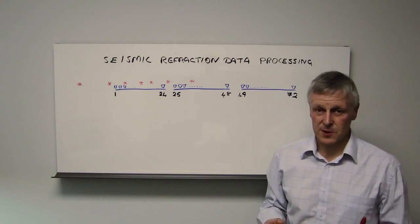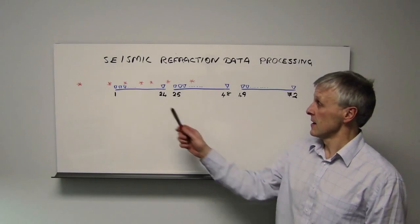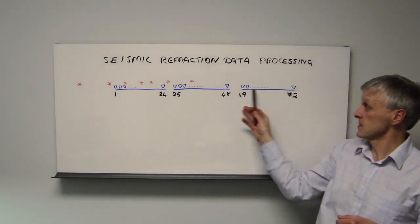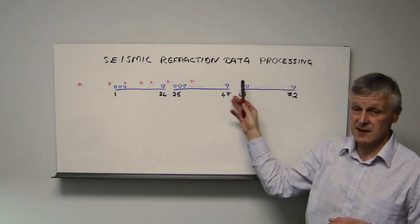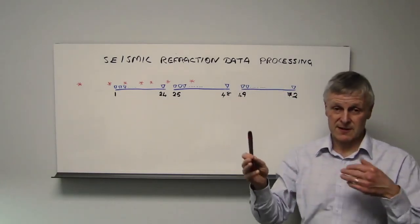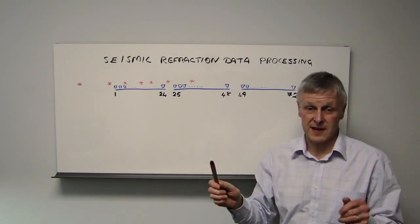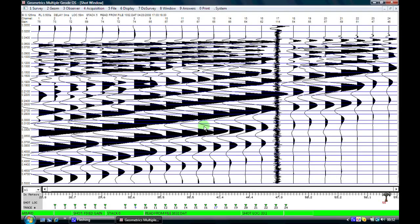We are now going to go back to the computer where we are going to process our field data. We are going to finish the processing with a sequence acquired using a data set acquired as three separate lines of data, which we will merge into one continuous data set approximately 72 meters in length. This slide is a typical seismic refraction record, which we will now explain.